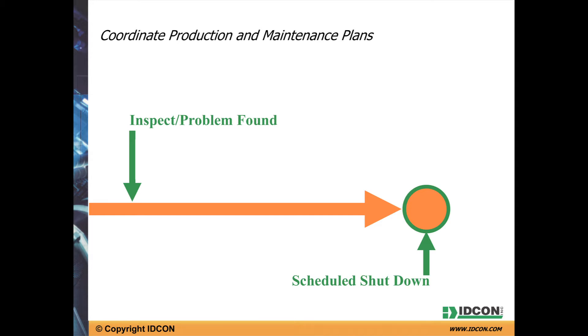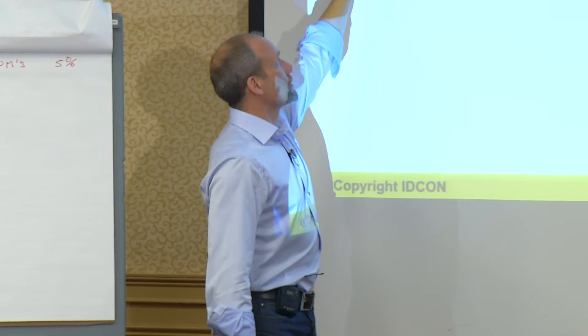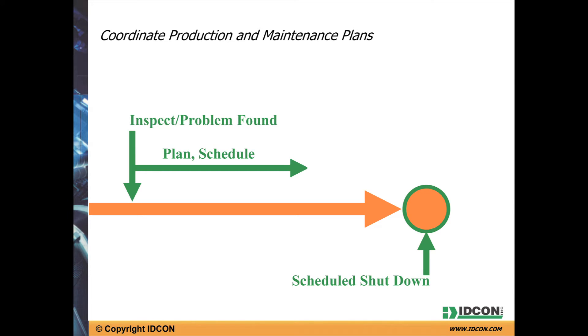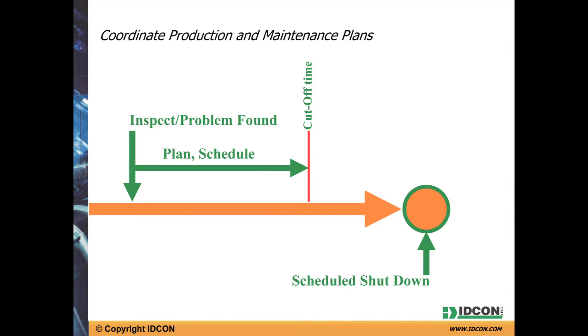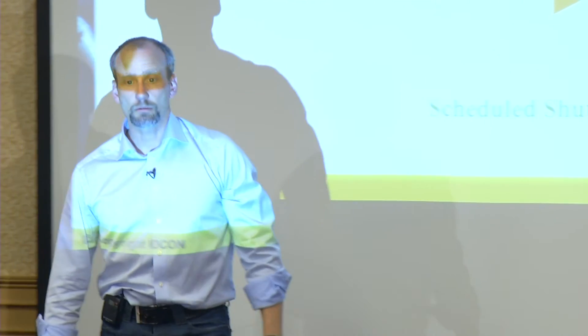We don't do this for just one job. When we look at a shutdown, we may do more intensive inspections leading up to it, plan and schedule everything, and handle many jobs at once. There has to be a hard cutoff time — after that cutoff, it should take the plant manager's signature to add something to the shutdown. If you allow people to just casually add jobs, you'll never build that culture. The cutoff has to be a very hard line to achieve really good planning and scheduling.